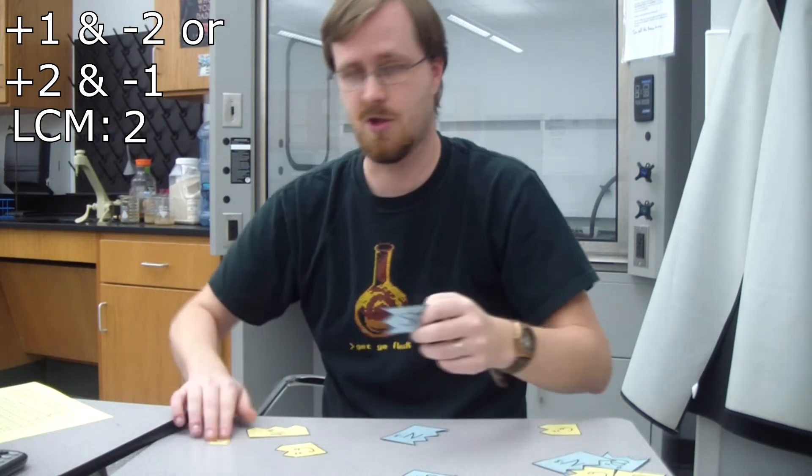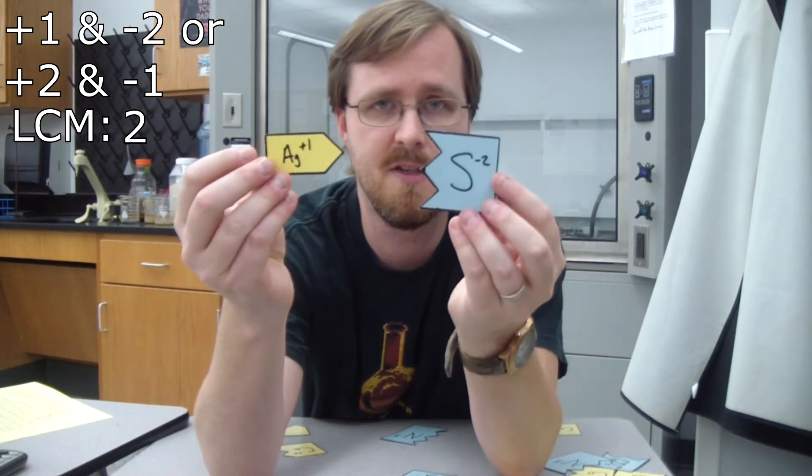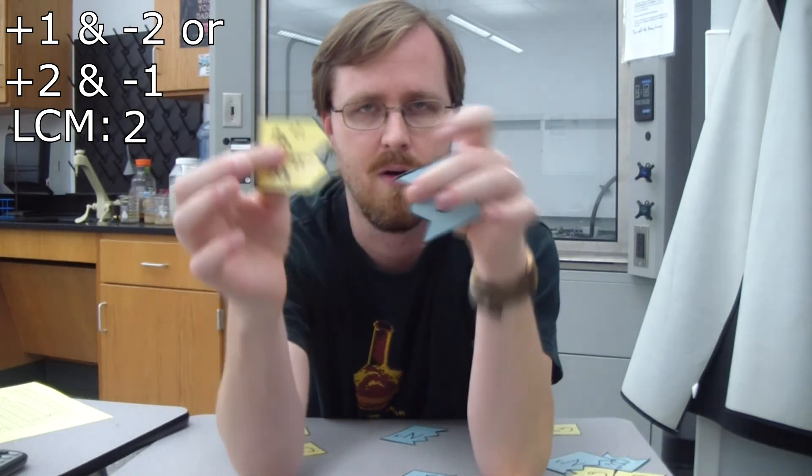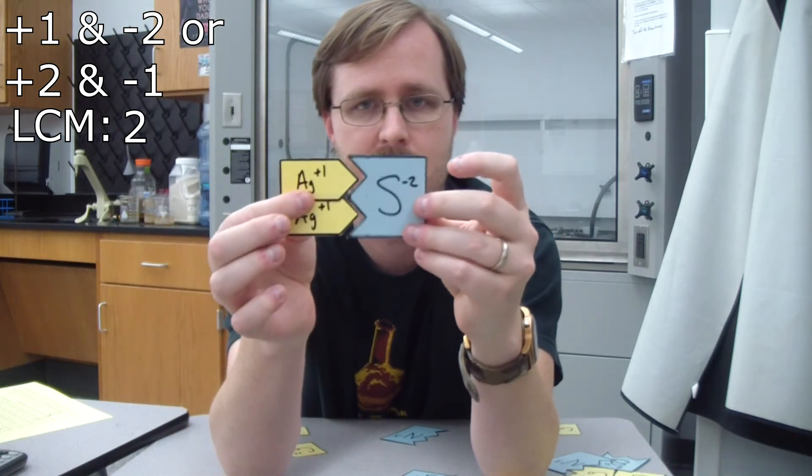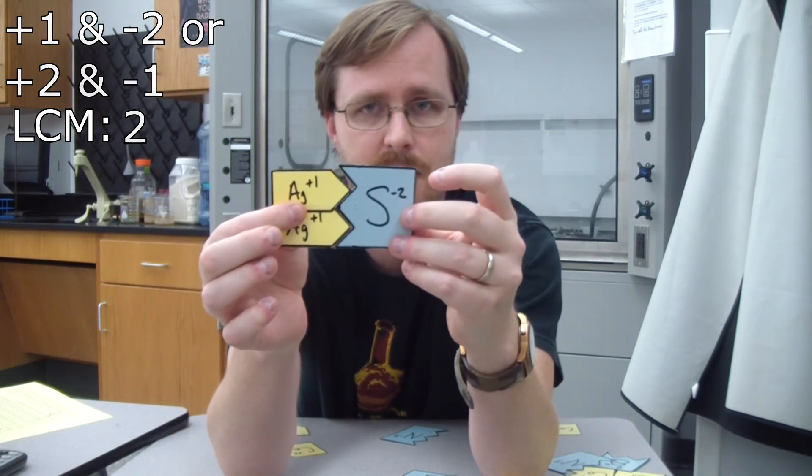For example, like the one I just showed you, with the silver plus 1 and the sulfur negative 2, in order to make this add up to 0, I need 2 silvers like so. So 2 silvers and then the 1 sulfur and then that adds up to 0.